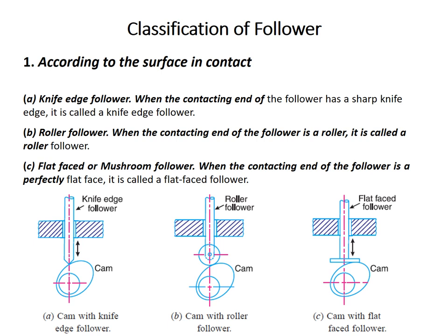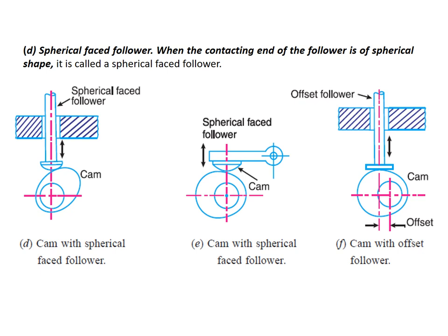Now, we will discuss the classification of followers. Followers are classified on the basis of the type of surface contact a follower has with the cam. The first one is the knife face follower — when the contacting end of the follower has a sharp knife face, it is called a knife face follower. Roller follower — when the contacting end of the follower is a roller, it is called a roller follower. When the contacting end is flat-faced, it is called a flat-faced follower. If the contacting end is of spherical shape, it is called a spherical-faced follower.